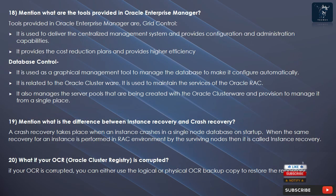Question 18: What are the tools provided in Oracle Enterprise Manager? Tools provided in Oracle Enterprise Manager are: Grid Control — used to deliver a centralized management system and provides configuration and administration capabilities; it provides cost reduction plans and higher efficiency. Database Control — used as a graphical management tool to manage and automatically configure the database. It is related to the Oracle Cluster, and is used to maintain Oracle RAC services, manage server pools, and provision management from a single place.